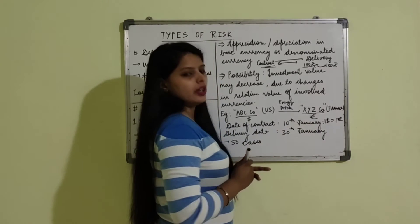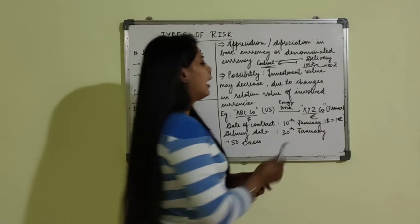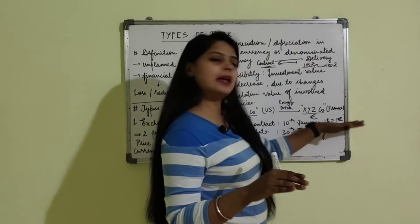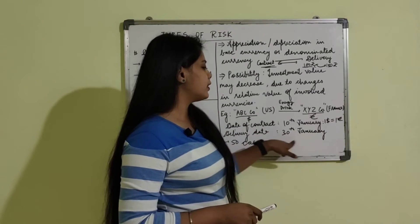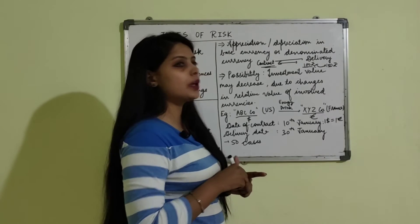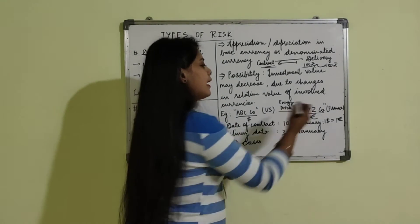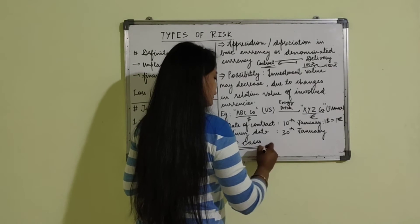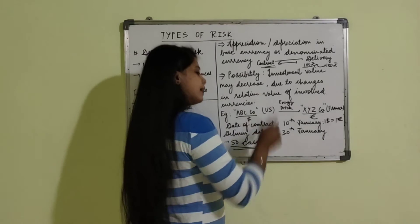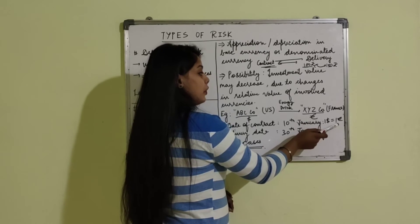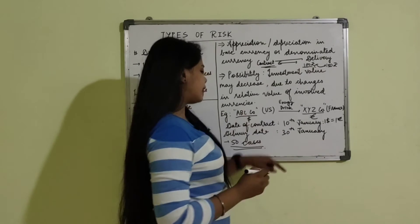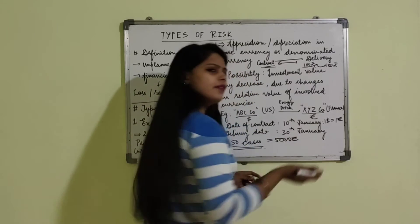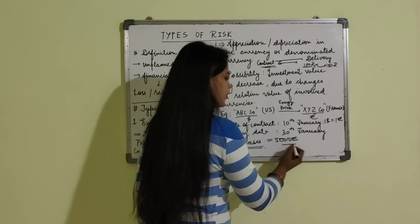The date of contract is 10th January. On 10th January the contract was made, and at that time the rate of exchange is 1 dollar equal to 1 euro — both rates are the same. The delivery date is 30th January, which is different from the contract date because it takes time for XYZ Company to provide the goods to ABC Company. The transaction is for 50 cases of energy drink. Since the exchange rate is same at the time of contract, the total contract price is 500 euros and 500 dollars.